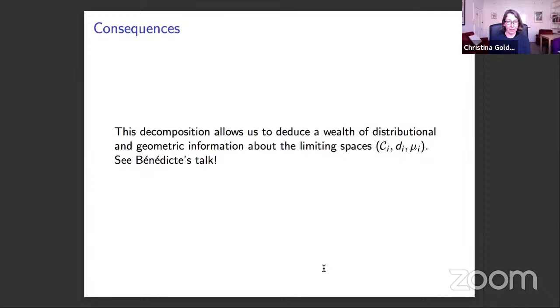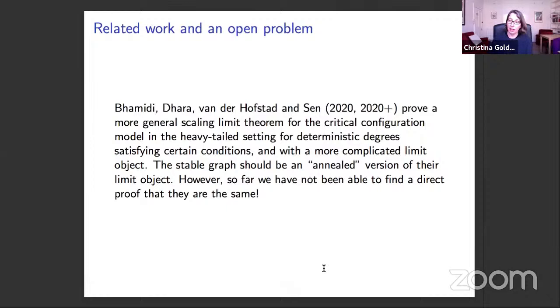We also have a decomposition: conditioning on the excursion lengths and numbers of Poisson points, the components are independent of one another and sampled from a canonical family indexed by the surplus. This allows deduction of a wealth of distributional and geometric information about these limiting spaces.